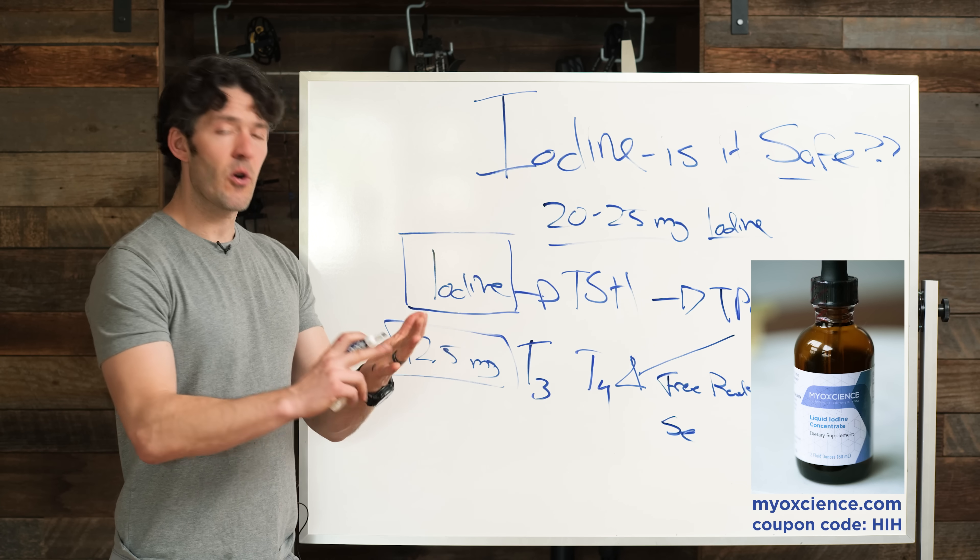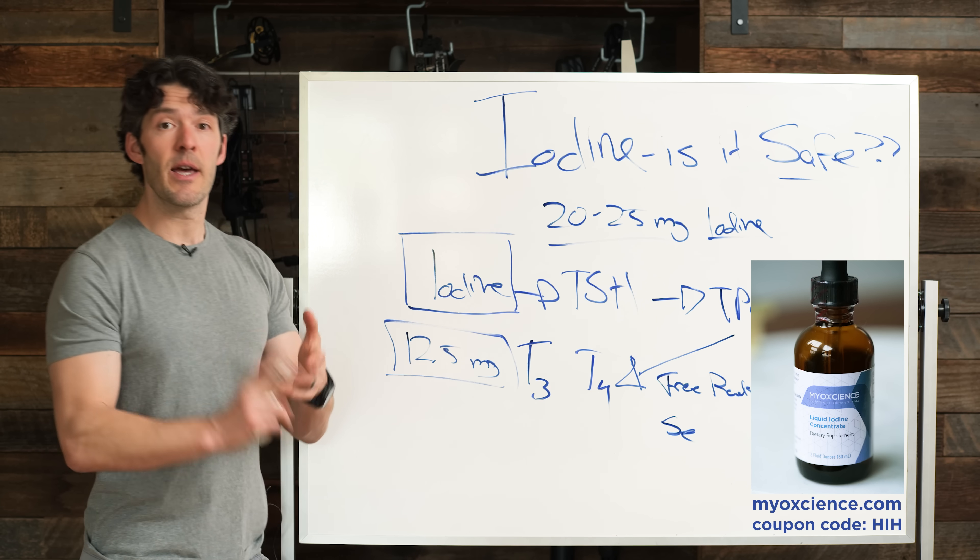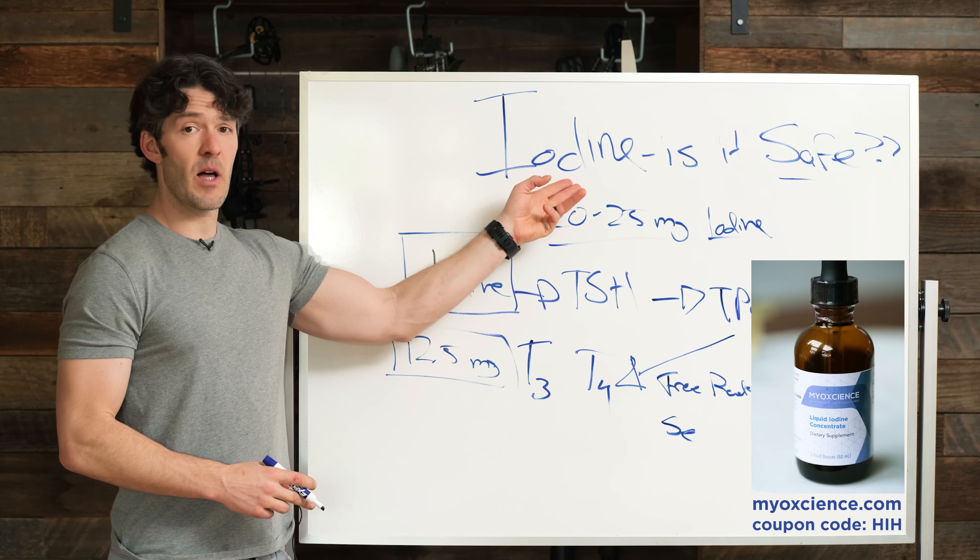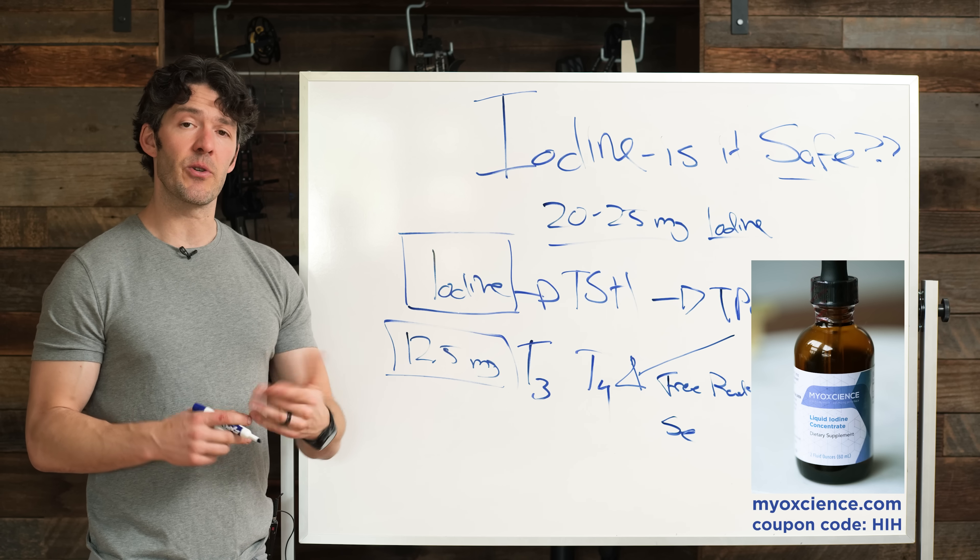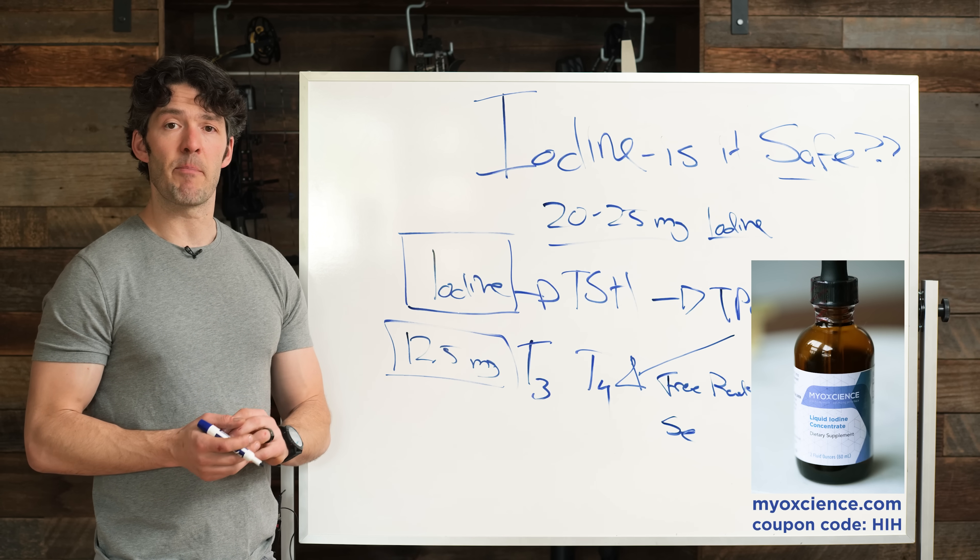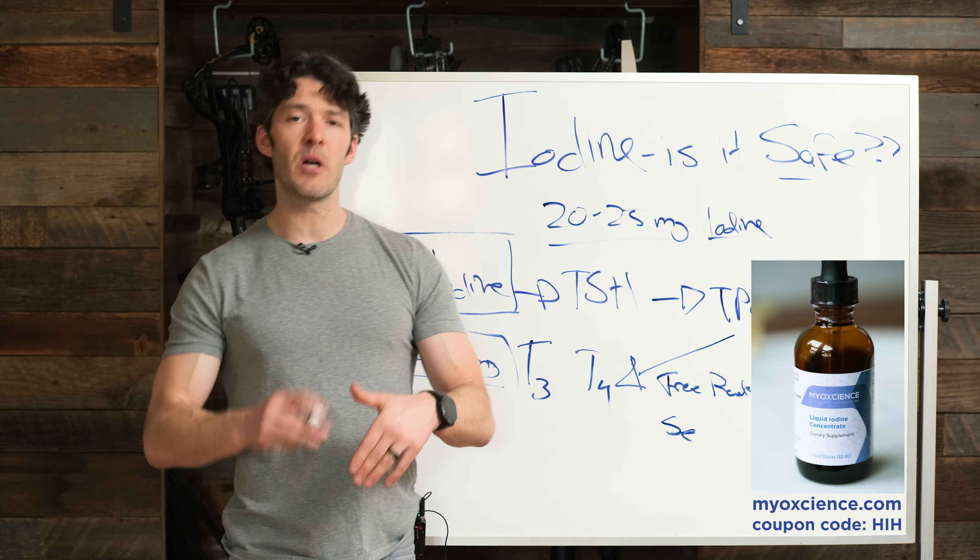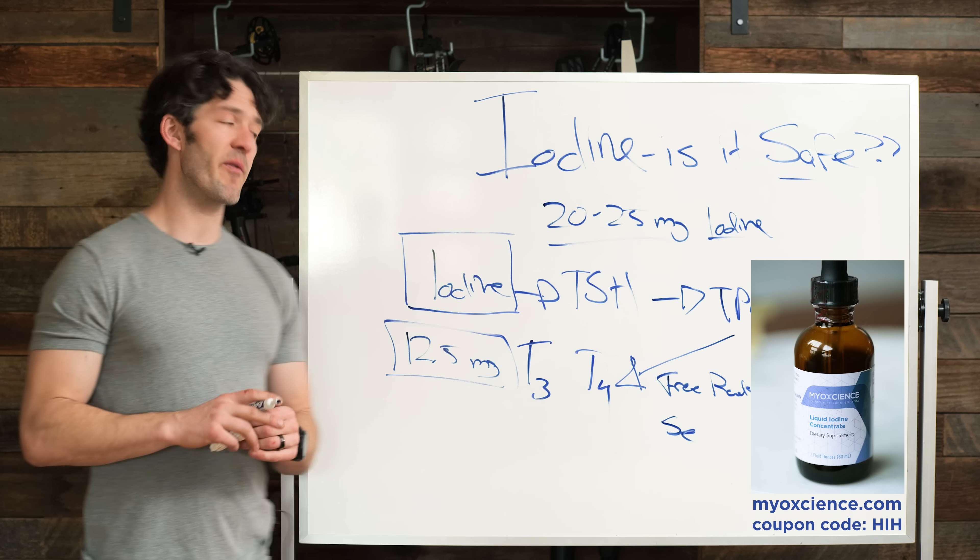You might remember halogens: chlorine, bromine, fluoride. Iodine it turns out is a lot more healthy than those other halogens, but it can prevent and sort of harm bacterial contaminants and things like that by affecting their cell membrane health. So I'll put links below. Use the coupon code HI to check out for that.